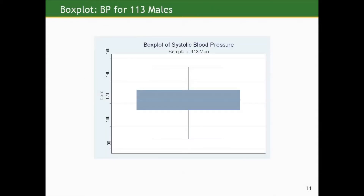Here's the box plot display of the distribution for 113 males. It's a little more concise in summarization than either the histogram or the stem and leaf, but it conveys similar information about the center, shape, and spread. The reason it's called a box plot is there's a shaded box in the middle. The line that appears between the two sides of this box, traced over to the vertical axis, gives the sample median blood pressure for these 113 men.